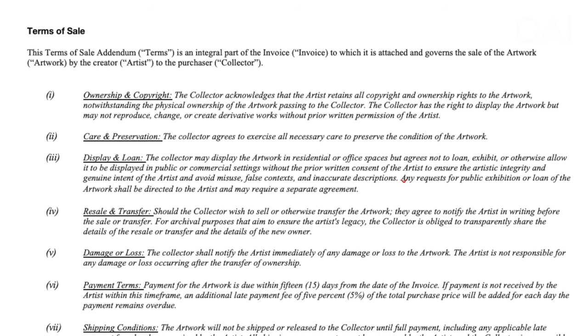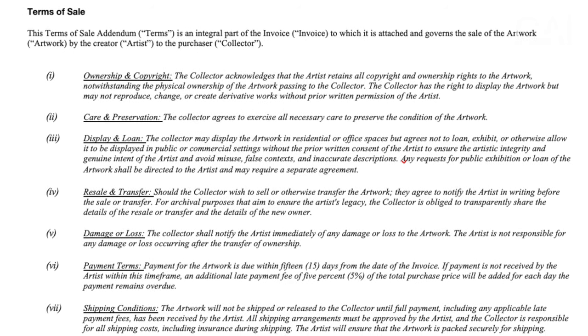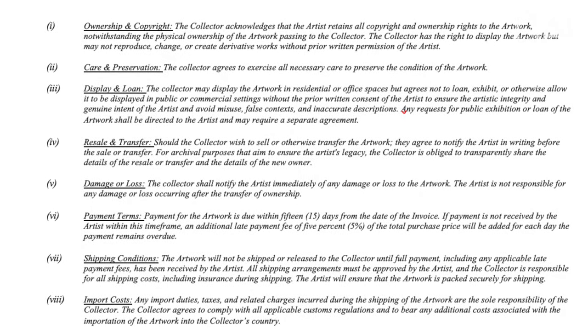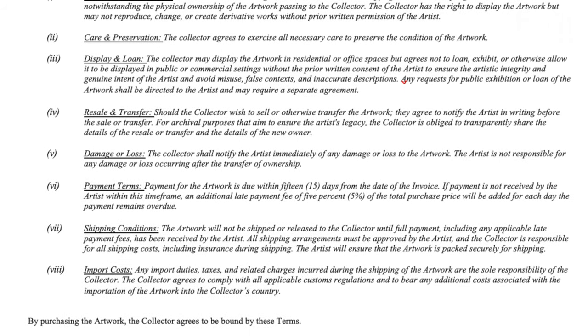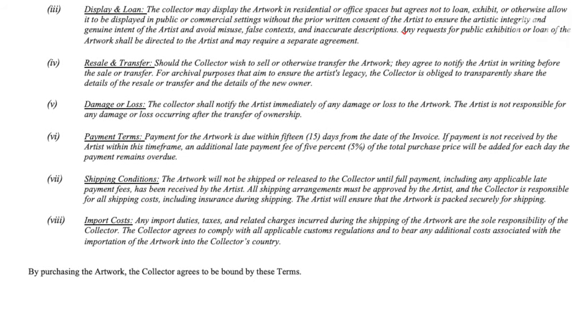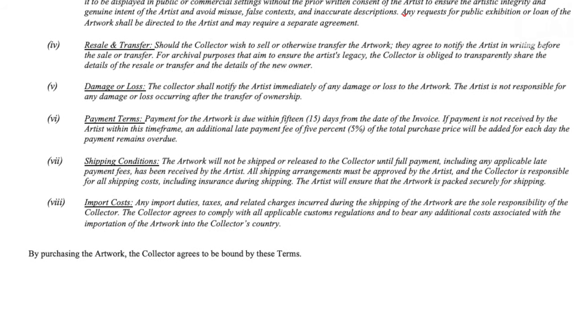It is a crucial component providing a legal framework that governs the sale of art, designed to ensure clarity and agreement on various aspects of the transaction, protecting the rights and obligations of both parties. In the general terms of sale included in the KAI invoice templates, we discuss: ownership and copyright of the artwork, care and preservation, display and loans, conditions for resale and transfers, what happens in case of damage or loss, payment terms, and shipping conditions including import costs. By having these terms of sale, both parties know exactly what they're agreeing to, and as an artist you protect yourself and your artwork against misuse.